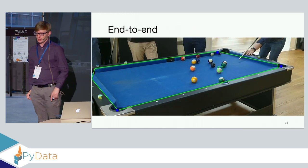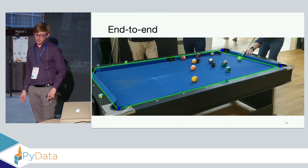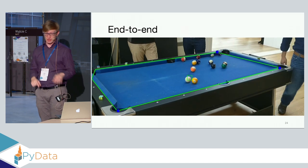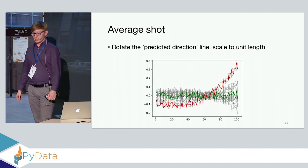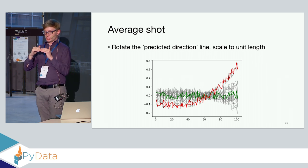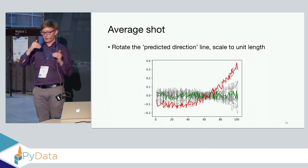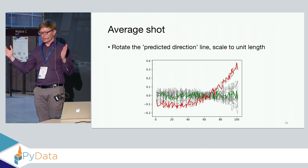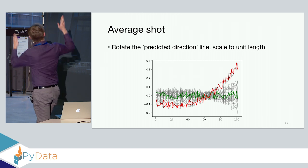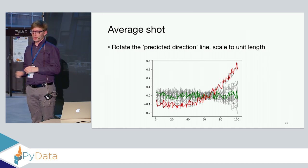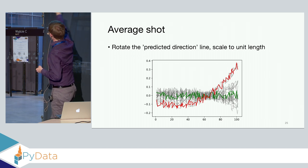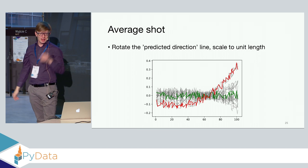There's a bonus visualization showing the end-to-end video where you can see the ball positions. This also represents the average of shots. To calculate deviation from a straight line, you rotate the shot and calculate the deviation, normalizing the length to a standard so you can compare two shots side by side. You can see a good straight-ish line shot and a badly skewed one in red.